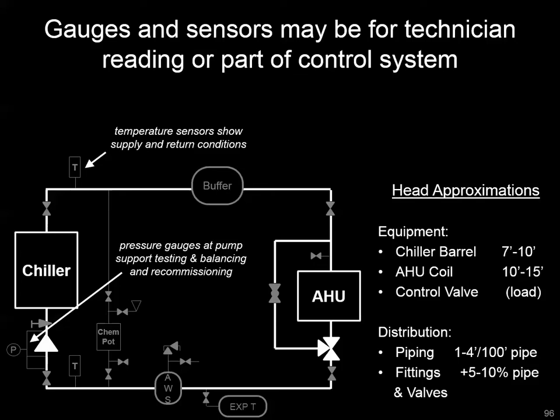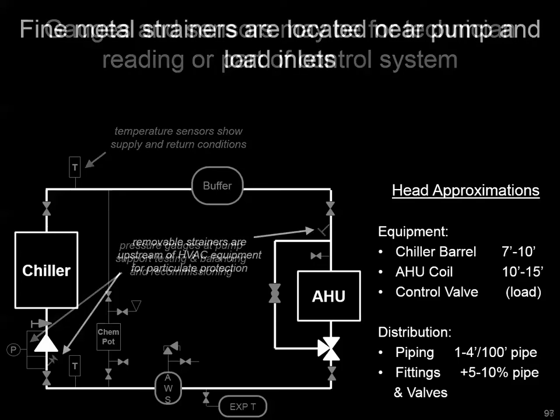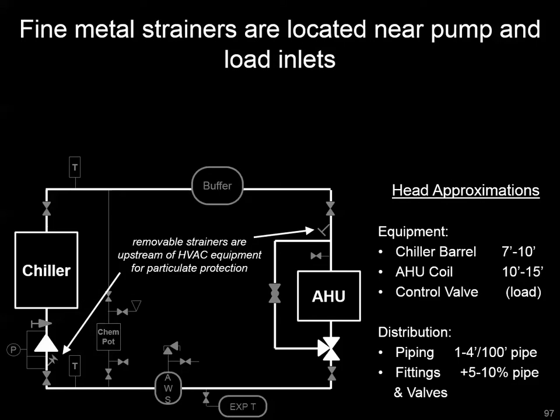You also have control devices and gauges — such as a pressure gauge across the pump and the pump strainer — and temperature sensors throughout the system that may be standalone or connected to your automation system. There are also removable strainers that should be upstream of any important piece of equipment like a pump or a coil. Those can be cleaned, and hopefully you have a gauge nearby to check if you have a clogged strainer that needs to be removed, replaced, or sprayed out.